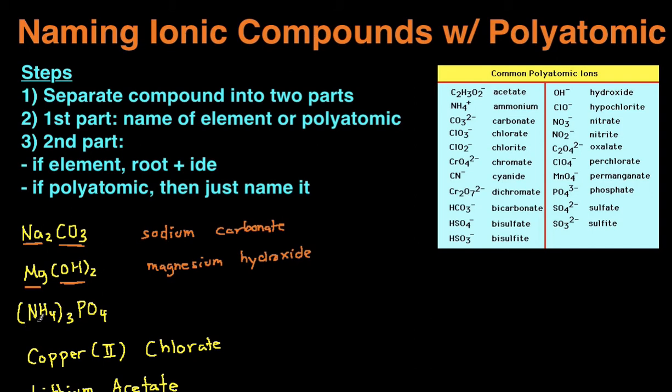Third one, separate these into two parts. So the two parts are going to be NH4 and PO4. So we have NH4 right here, and then we have the PO4. So those are two parts. The first part, we just name the element or the polyatomic ion. NH4 is ammonium. And then the second part is PO4 and it's a polyatomic ion, so we just name it. So it becomes ammonium phosphate.